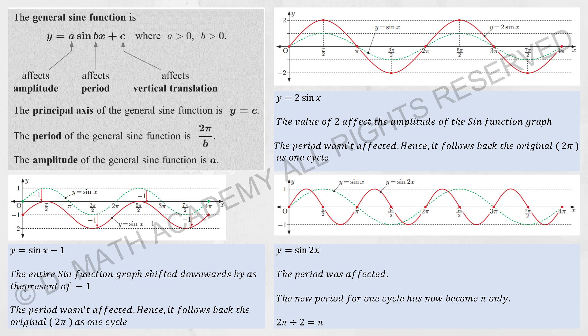For the first one, the general sine function, we have y equals to a sine bx plus c. A actually represents the amplitude, b represents the period, and c represents the vertical translation.